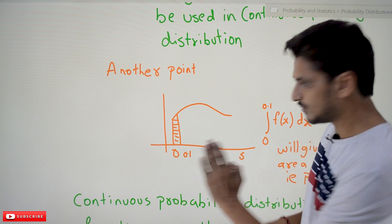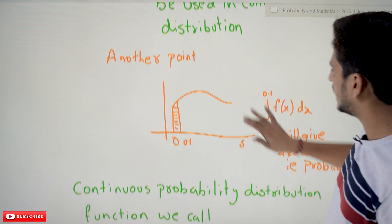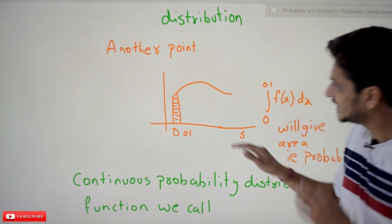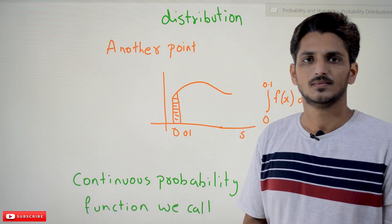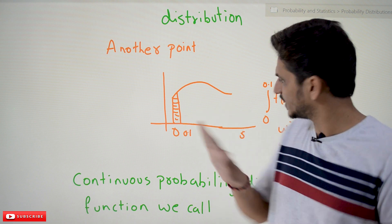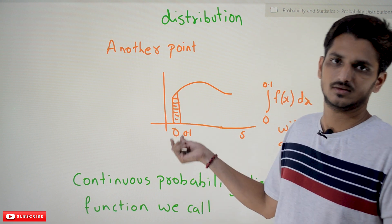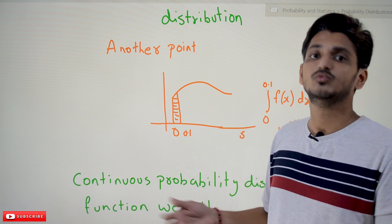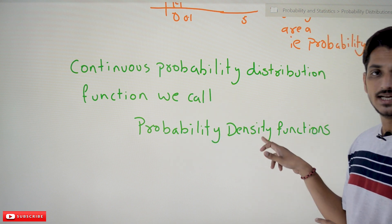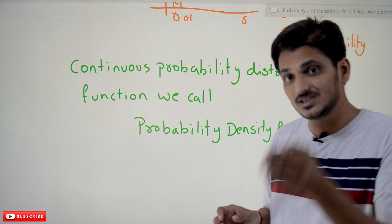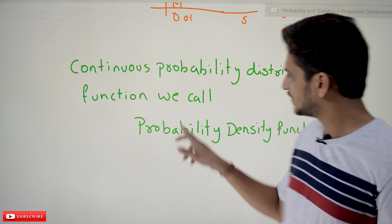If you distribute probability values under this curve for the random variable X, which exists from 0 to 5, and you find the integral from 0 to 0.1 of f(x) dx, you get the area under the curve from 0 to 0.1 — and that area represents the probability value. That is how our random variable X is distributed under this function based on the area. The functions that satisfy these continuous probability distribution conditions we call probability density functions, as opposed to probability mass functions for discrete distributions.